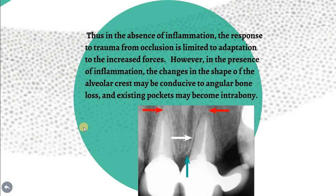In the absence of inflammation, the response to trauma from occlusion is limited to adaptation. If there is no inflammation or periodontitis, the tooth is relieved and adapts to the external forces. However, in the presence of inflammation, changes in the shape of the alveolar crest may be conducive to angular bone loss, and existing pockets may become infrabony or intrabony pockets. Resolution of inflammation is therefore the key feature in minimizing the effects of external occlusal forces.